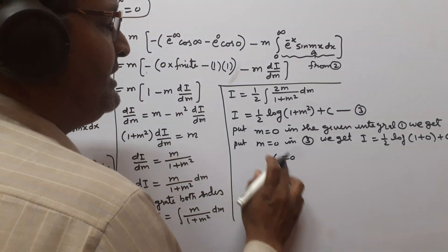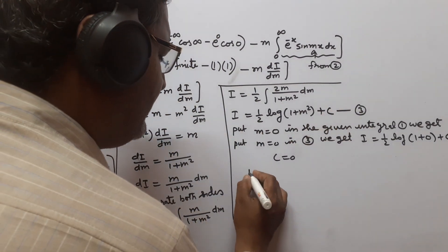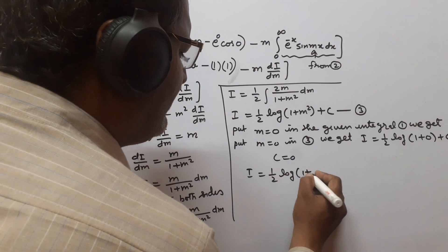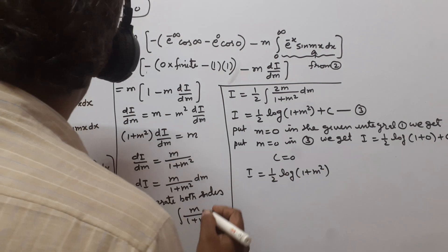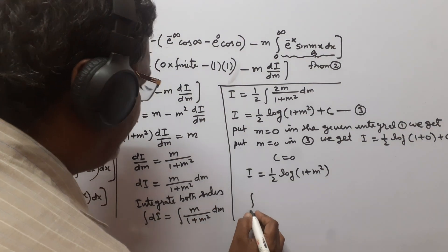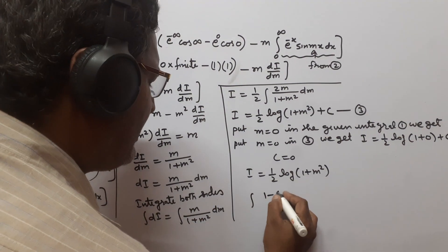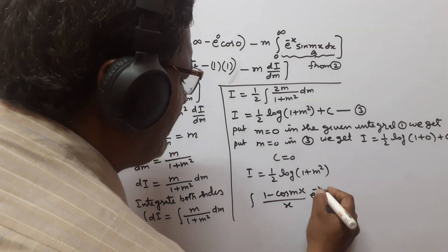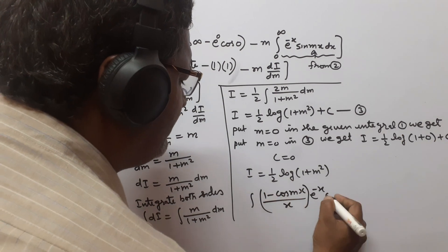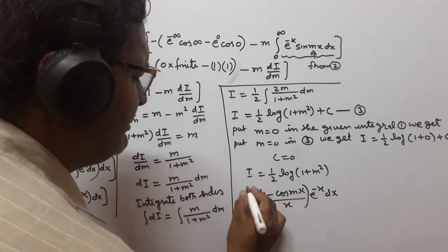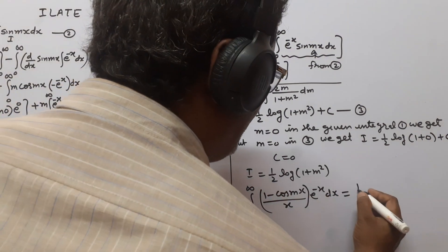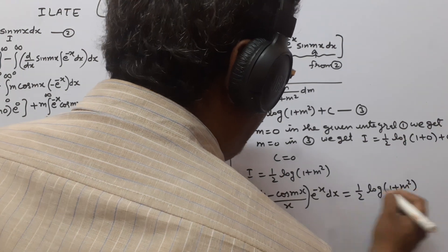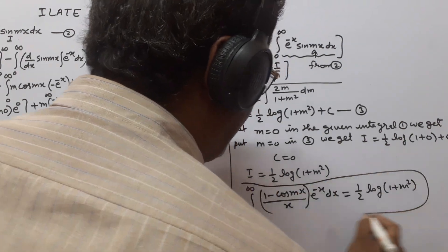Now put the value of C = 0 in equation 3. We get I = (1/2) log(1 + m²). So the integral of (1 - cos(mx)) / x multiplied by e^(-x) dx between the limits 0 to infinity equals (1/2) log(1 + m²). Thank you.